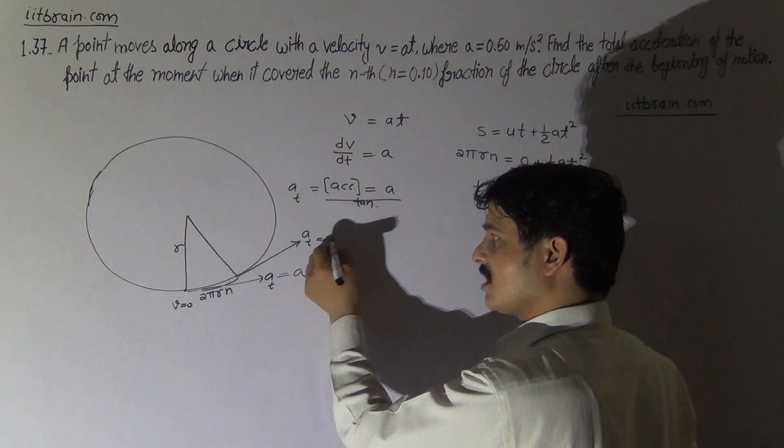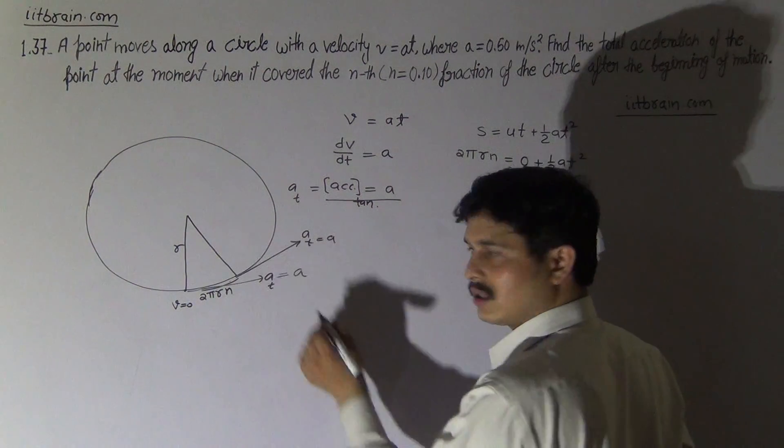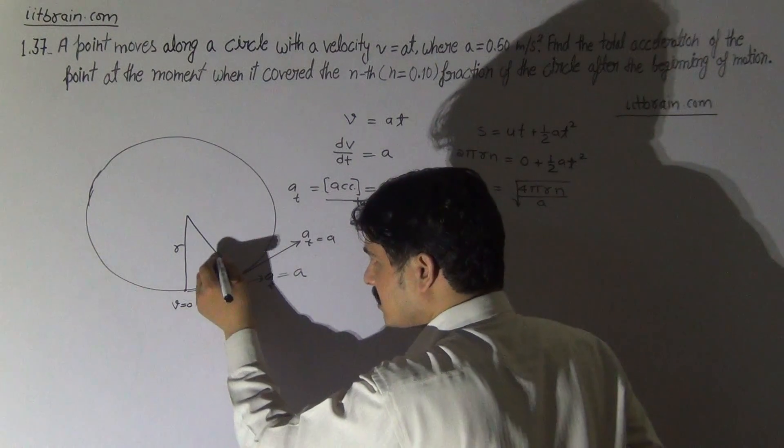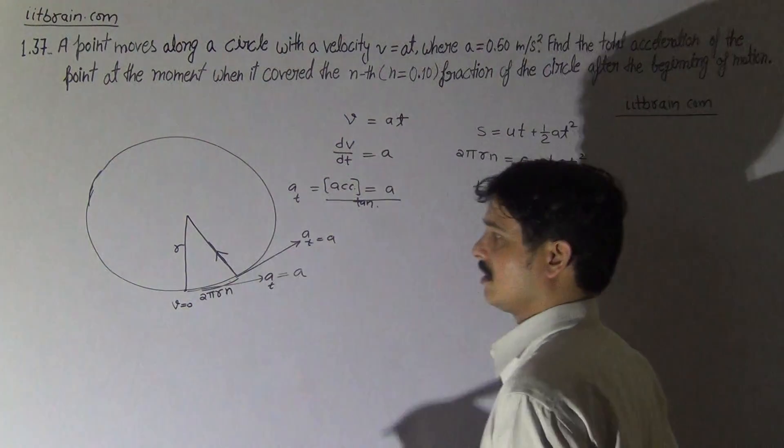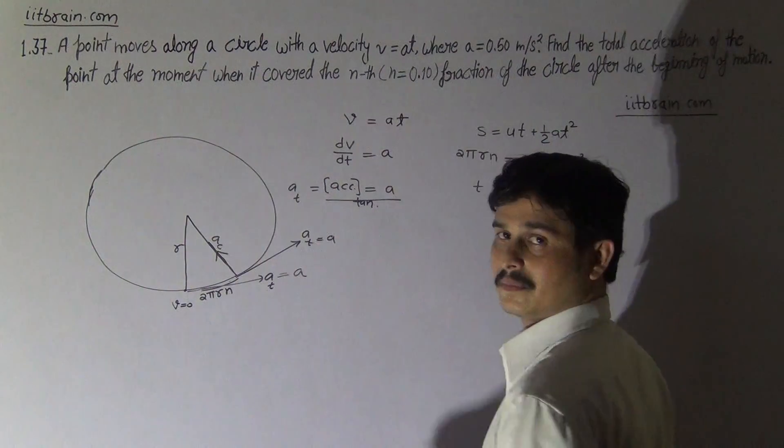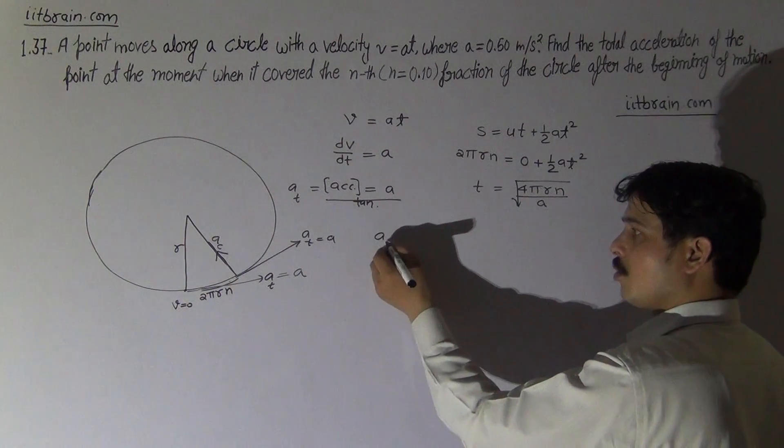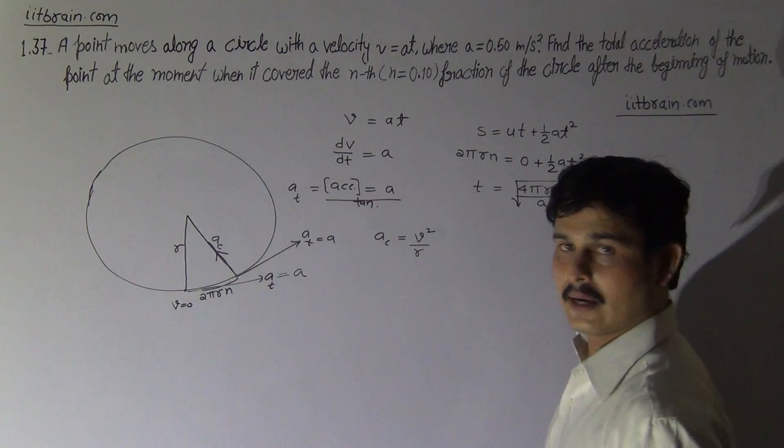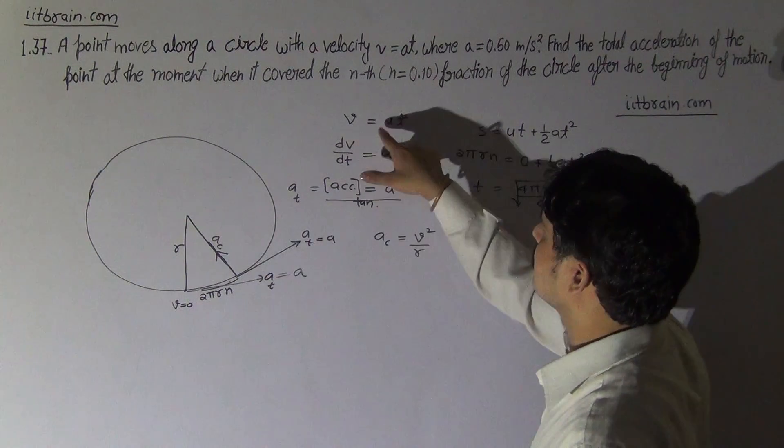This will also be at this position. This is only numerical magnitude, direction will be different. And centripetal acceleration along center, the second acceleration that is centripetal acceleration, can be obtained by the formula v²/r. Velocity at this position is at.